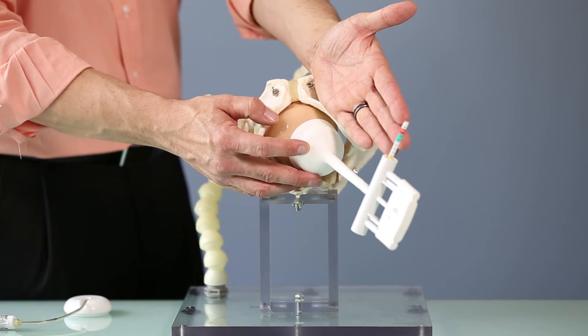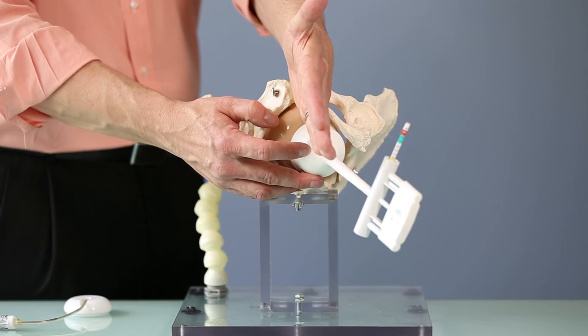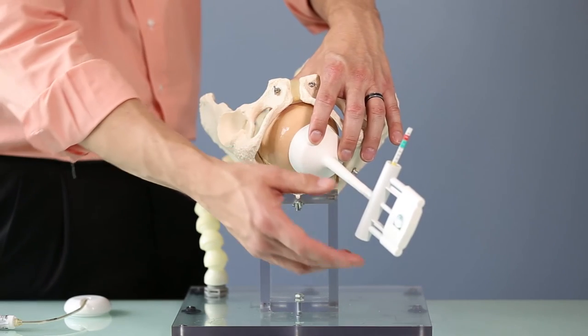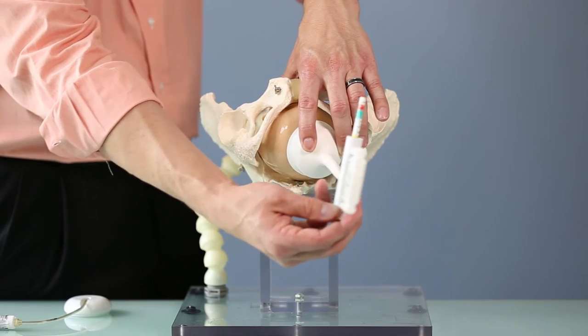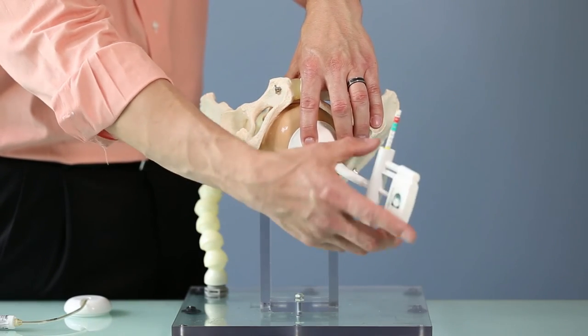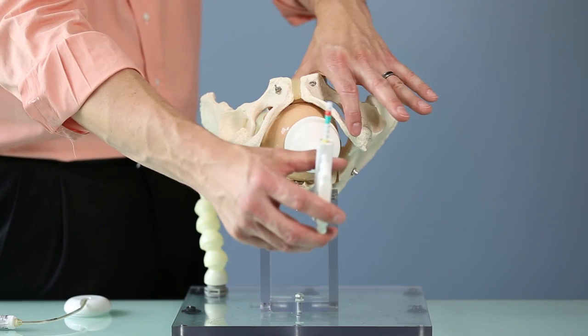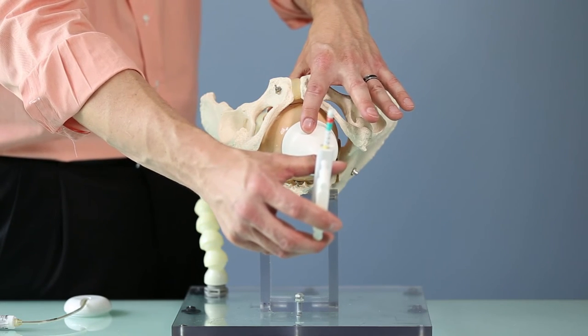We obviously all pull along the curve of Carus or along the axis of the pelvis in this direction. The problem is rigid stemmed cups are designed to be pulled at 90 degrees from their attachment. So as soon as we try to pull in the axis of the birth canal, we end up popping the cup off and causing abrasions.